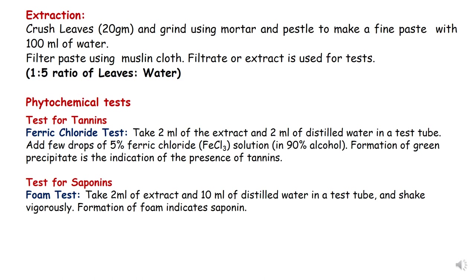The first step involves extraction. Crush and grind the leaves using a pestle and mortar to make a fine paste. The ratio of leaf to distilled water is 1:5. For example, if you have 20 grams of leaf, crush it in 100 ml of water. After grinding, filter it using muslin cloth and the filtrate is used for phytochemical tests.